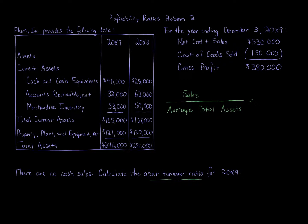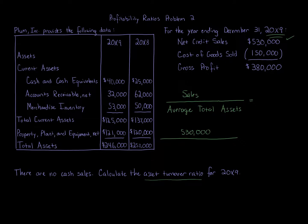For sales, we're given net credit sales, so we'll use that $530,000 as our numerator. Sales data was only given for 20x9, and we're looking for the asset turnover ratio for 20x9.